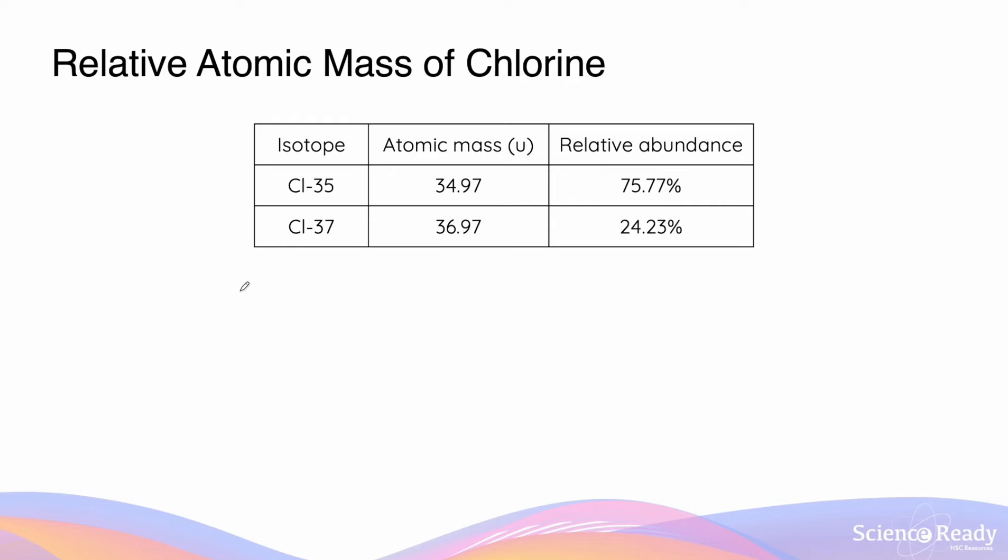Now this is not always the case. Sometimes in elements, relative atomic mass could be in between the atomic masses of their isotopes. For example, chlorine-35 and chlorine-37 are the two stable isotopes of chlorine. And these are the atomic masses respectively. You can see in this instance, the chlorine-35 isotope has a relative abundance of 75.77%, and the chlorine-37 isotope makes up the remaining percentage.